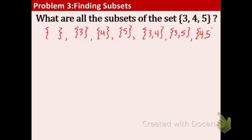And you don't need to change the order. They're the same thing. So we don't need to rewrite those. And the last is the original set. The original set is always a subset of itself. So all of those are subsets of the original set 3, 4, 5.